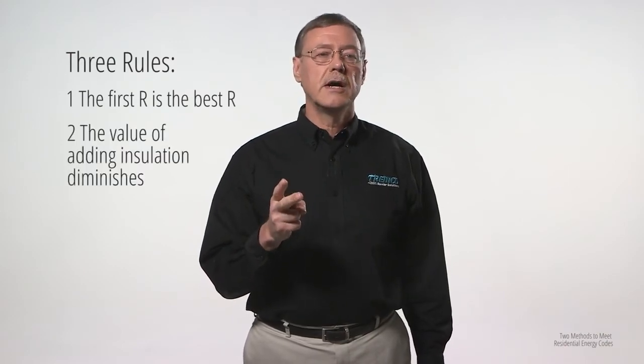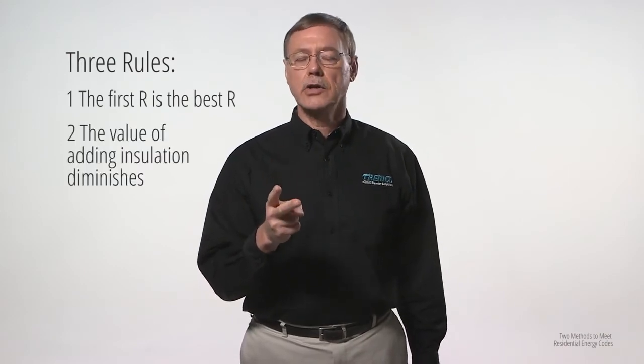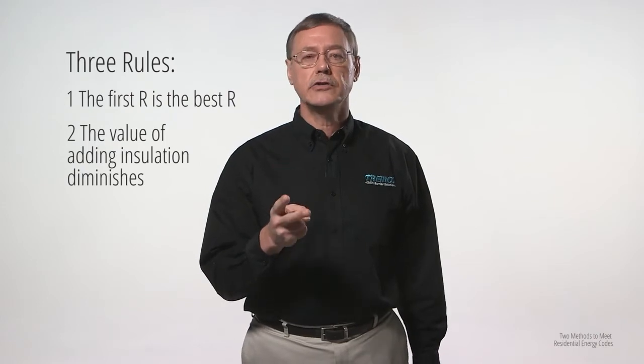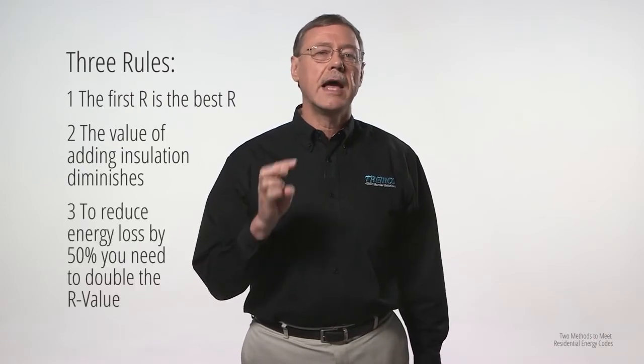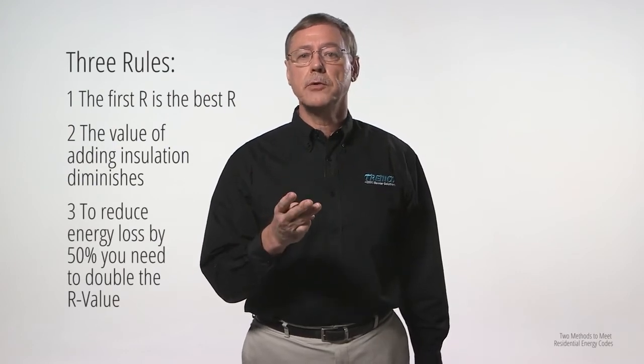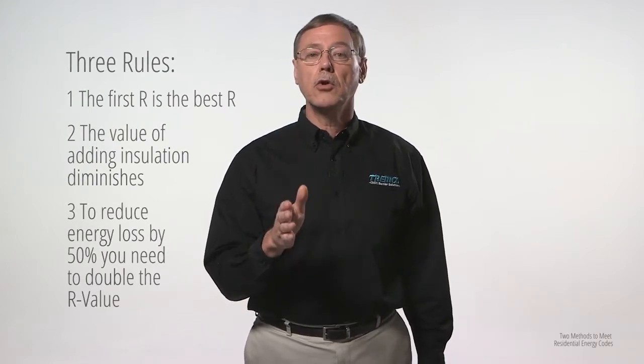To understand the difference, we need to look more fully at the diminishing value of insulation. There are three rules to remember. Number one: the first R is the best R. Number two: the value of adding additional insulation diminishes as you increase the insulation level. And number three: to reduce energy loss by 50%, you need to double the R value.